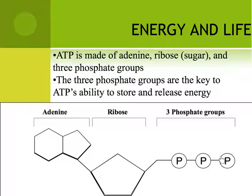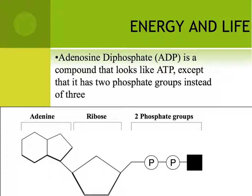By removing that third phosphate from the molecule, the cell is gaining energy because when the bond breaks, energy is released. When a phosphate is removed, it creates adenosine diphosphate, or ADP for short. Adenosine diphosphate is also an energy molecule, but it doesn't have as much energy as ATP. So when cells have extra energy to store, they will add a phosphate back to ADP. ADP is basically a recyclable molecule that cells are constantly adding a phosphate to and then removing that phosphate when they need the energy.